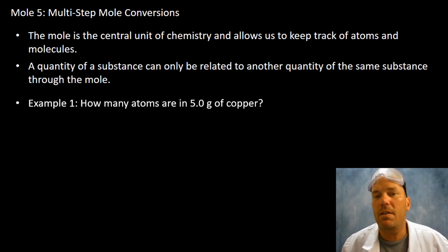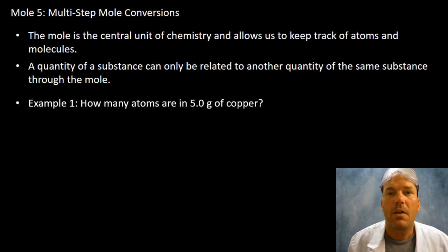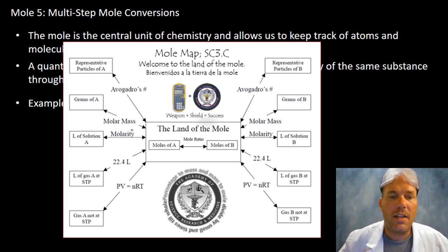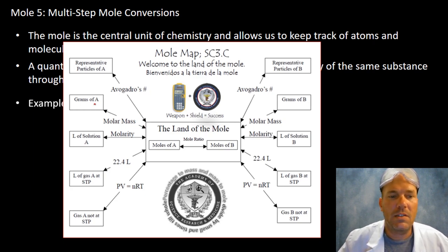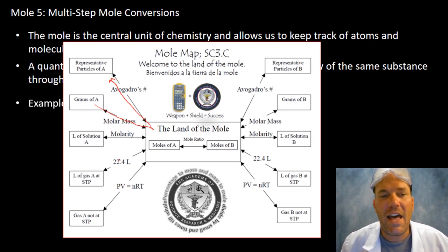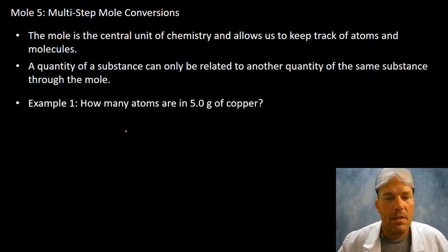Our first example asks: how many atoms are in 5.0 grams of copper? We're given grams and asked for atoms. Using the mole map, we're going from grams to moles using molar mass, and then from moles to the number of particles — i.e., atoms — using Avogadro's number.